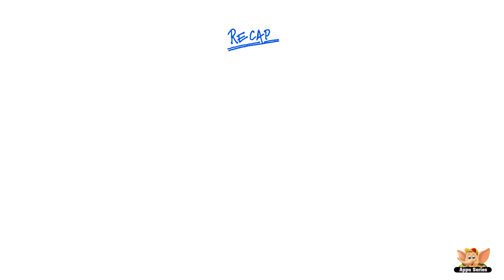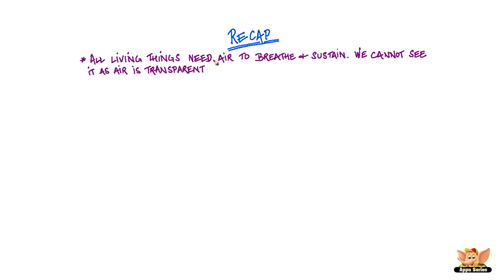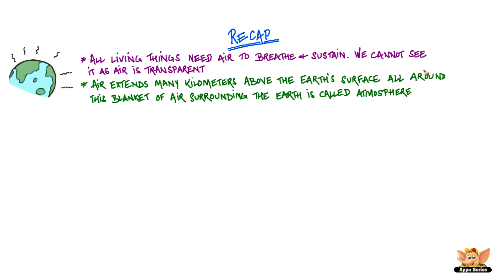Let's have a quick recap of all that we've talked about in our videos about air around us. All living things need air to breathe and sustain. We cannot see it as air is transparent. Air extends many kilometers above the earth's surface all around. This blanket of air surrounding the earth is called atmosphere.